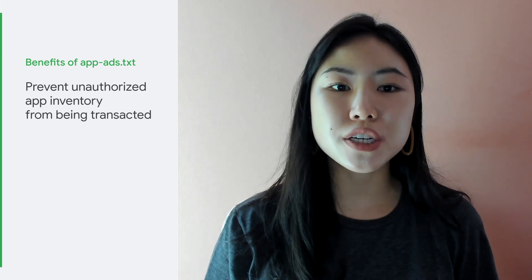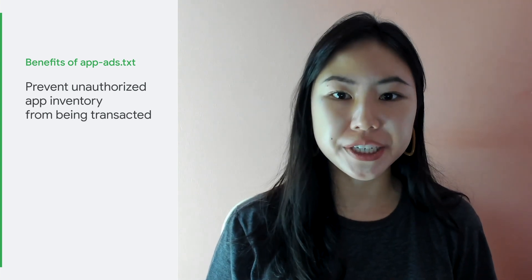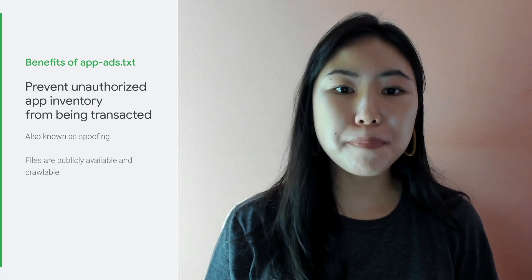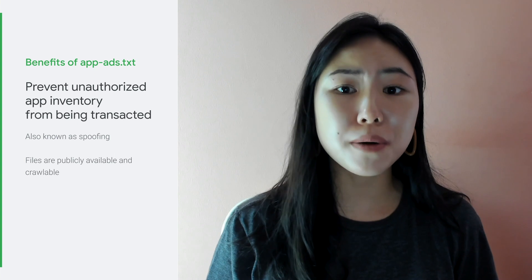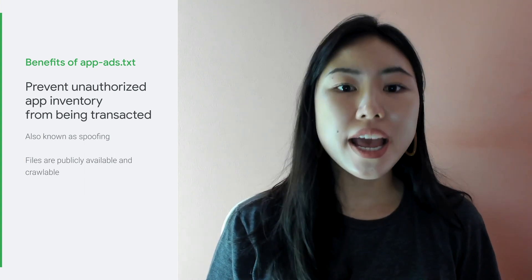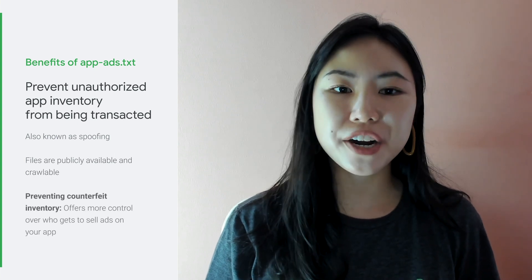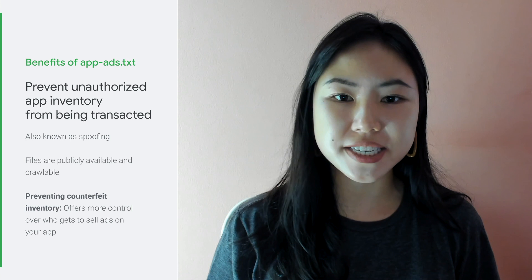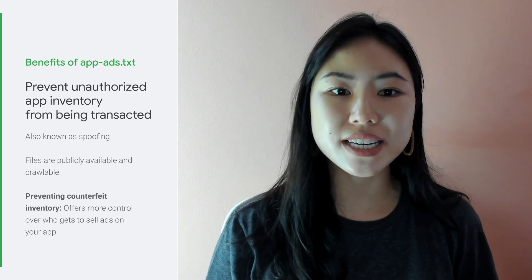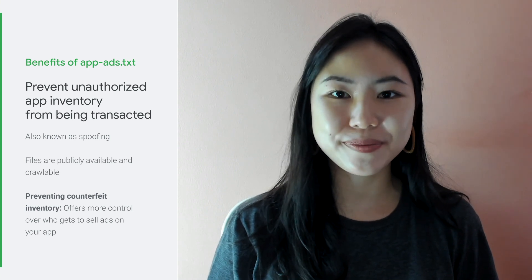Apex.txt aims to address the problem of misrepresented app inventory, also known as spoofing. The Apex.txt files are publicly available and crawlable by exchanges, supply-side platforms or SSPs, and other buyers and third-party vendors. We strongly encourage you to adopt Apex.txt to help protect your inventory from authorized buyers and prevent counterfeit inventory from damaging your brand.